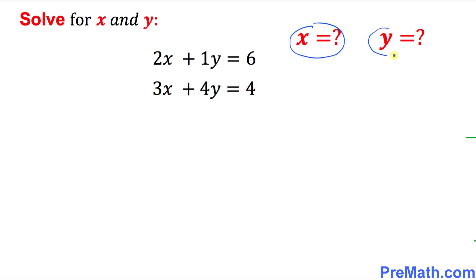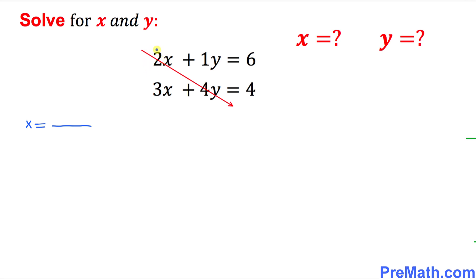Now we are going to find the x value and y value. Let's start off with x. Since we want to find x, we'll make a fraction. The next step is to cross multiply from left to right: 2 times 4 is going to give us 8. So I'm going to write at the denominator in parentheses (8) minus, the other way around, positive 1 times 3 is going to be minus (3).